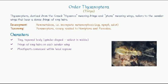In this video, we will talk about Thysanoptera, which are examples of Thrips. Thysanoptera means 'fringe-winged,' referring to the slender wings that bear a dense fringe of long hairs. The thrips body is very small and slender, with fringes present on its edges and long hairs present on the wings.